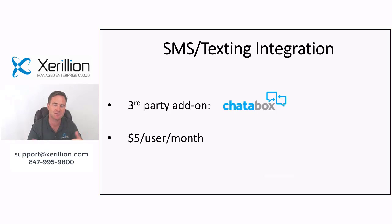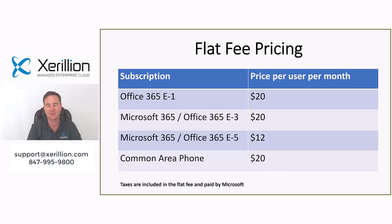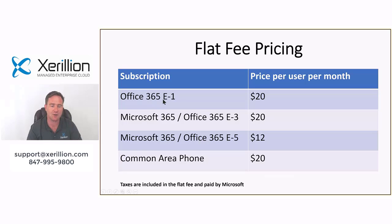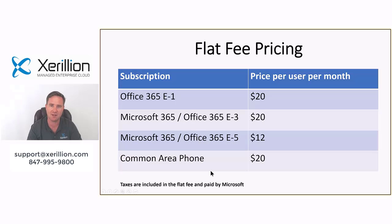For SMS texting integration, you can send text messages through the Microsoft phone system using a third-party add-on called Chatabox, at $5 per user per month. For pricing, the Microsoft phone system is available in the enterprise versions of Office 365 or Microsoft 365. Office 365 E1 is a $20 per user per month add-on. Microsoft 365 or Office 365 E3 is also a $20 per user add-on. Microsoft 365 or Office 365 E5 is a $12 per user add-on. A common area phone subscription is $20 by itself. Taxes are included in the flat fee and paid by Microsoft.